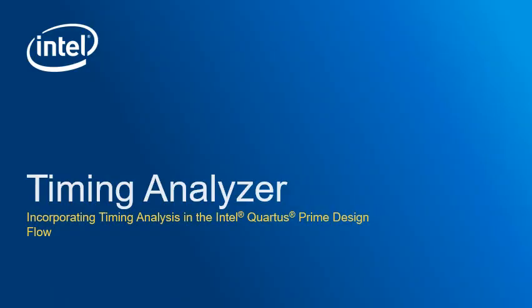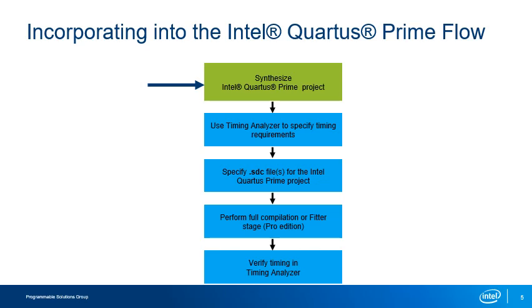Now that you know the basics of how to use the tool, how do you incorporate its use into the Intel Quartus Prime design flow? Here is a slightly altered version of a typical Intel Quartus Prime design flow that incorporates the use of the Timing Analyzer. If you are using the Intel Quartus Prime Standard or Light Edition, you can use a post-synthesis netlist to start creating timing constraints and analyzing the design before performing a full compilation. To do this, first synthesize the design. Timing Analyzer requires the design to be synthesized in order to create a post-map netlist.